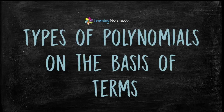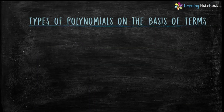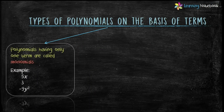Now let's understand types of polynomials on the basis of terms. First is monomials. Polynomials having only one term are called monomials. For example, 5x, 3, minus 9y squared — these are all monomials, because there is only one term in each of these polynomials.